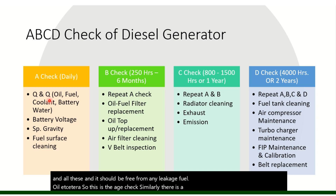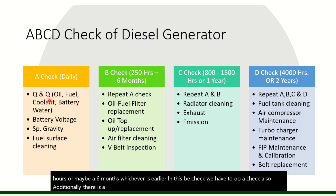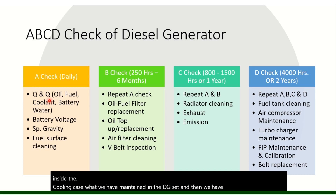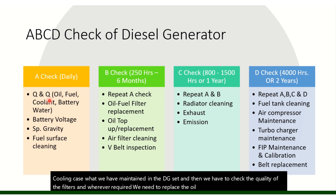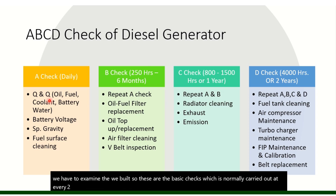The B Check is performed every 250 hours or six months, whichever is earlier. In addition to the A Check, it includes replacement and top-up of engine oil and water coolant in the cooling system. We also check the quality of filters and replace the oil filter, fuel filters, and air filters where required. The V-belts are also examined. These are the basic checks carried out at every 250 hours of DG operation or six months, whichever is earlier.